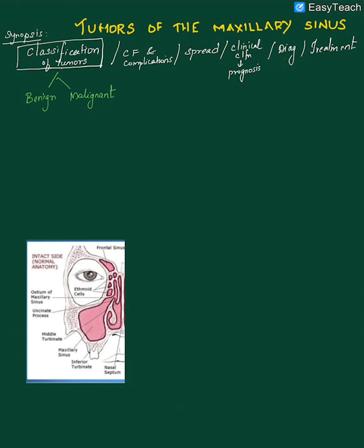The maxillary sinus tumor usually arises from the lining epithelium of the sinus, and can be either benign or malignant. In many conditions, tumors arise outside the maxillary sinus, such as from the maxillary bone, and penetrate into it — for example, ameloblastoma, fibrous dysplasia, or ossifying fibroma. Tumors can also arise within the sinus from the lining, such as inverted papillomas or hemangiomas, which are benign.